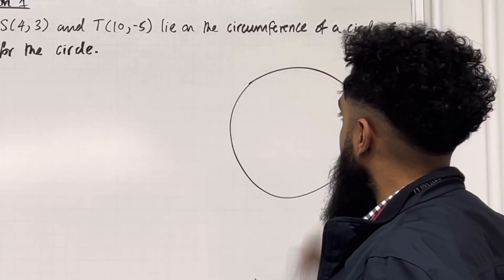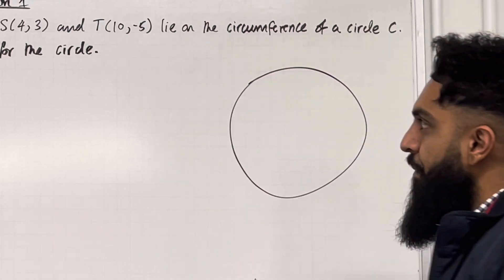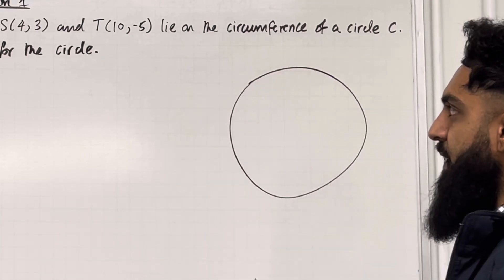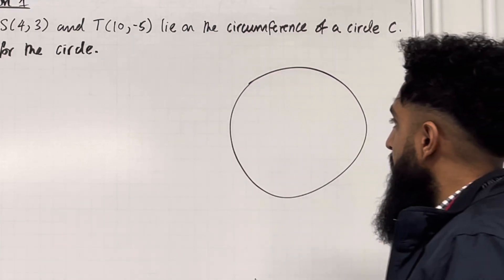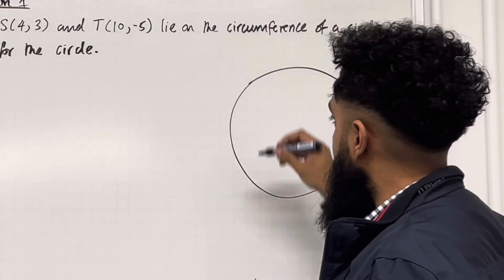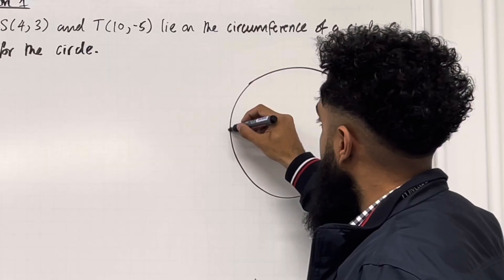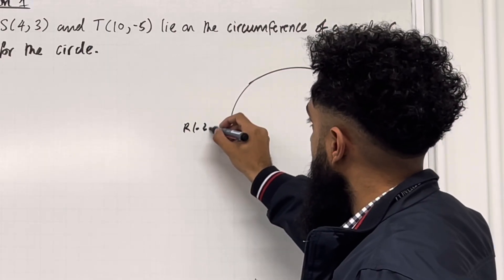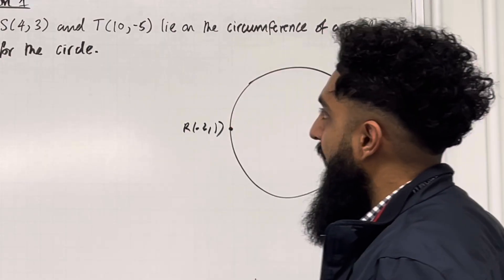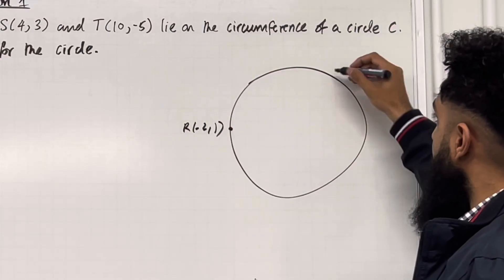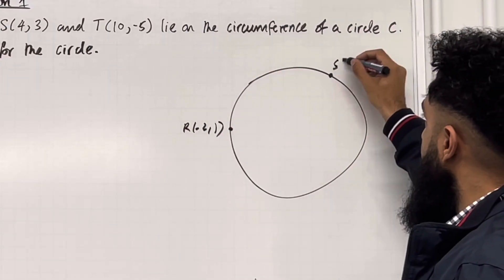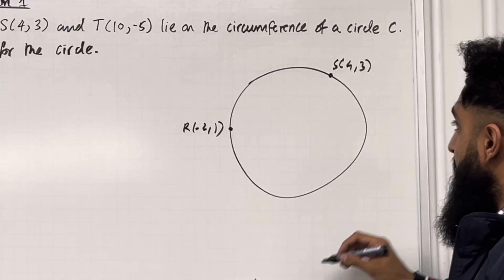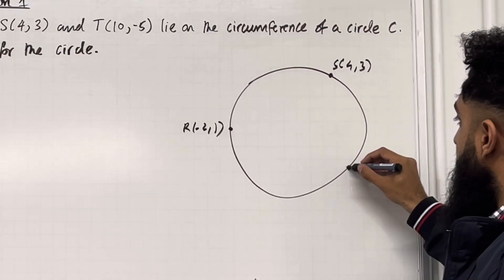So here is my circle. I've got the points R, S and T on the circumference of the circle. R would be roughly over here, S would be roughly over here, and T would be roughly over here.